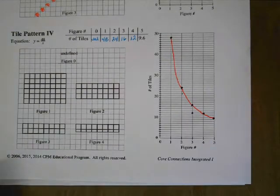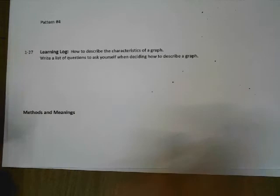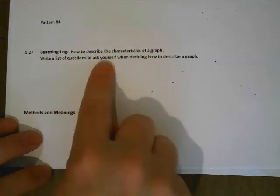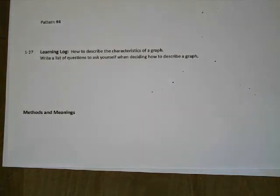Alright, so at this point, we're going to do what's called a learning log. Every once in a while in a lesson, you're going to get a learning log where you're supposed to kind of get all of your thoughts together for what you've done. So, this one is a learning log that's going to ask the question, how to describe the characteristics of a graph. So write a list of questions to ask yourself when deciding how to describe the graph. So later on in other units or other lessons, it might say, hey, describe this graph. Well, what's it looking for? Well, we've talked about shape, we've talked about increasing, decreasing, we've talked about continuous or discrete. So, list those questions that we've talked about previously in this lesson, and that way you can go back every once in a while and say, okay, it's asking me to describe this, so these are the things that I'm supposed to use to describe.